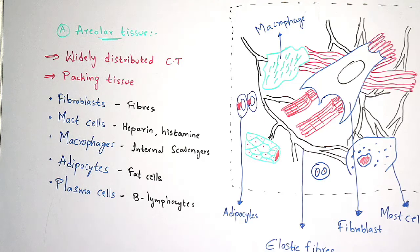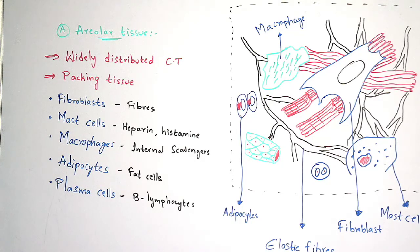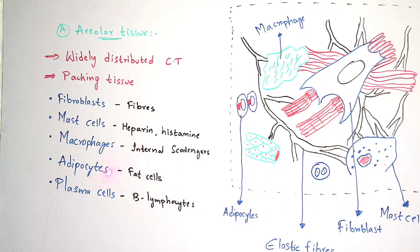Elastic fibers are yellow and collagen fibers are white in color. Mast cells help in the secretion of heparin, histamine, bradykinin, and serotonin. Macrophages are a type of white blood cells present in the immune system — they act as internal scavengers, helping in the digestion of foreign materials such as microorganisms. Adipocytes are fat cells present in adipose tissue, and plasma cells are mainly composed within the lymphocytes and help in the production of antibodies.